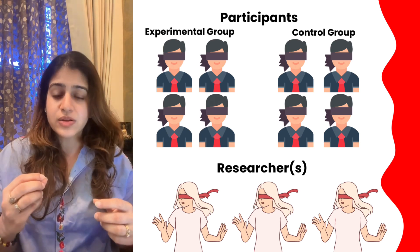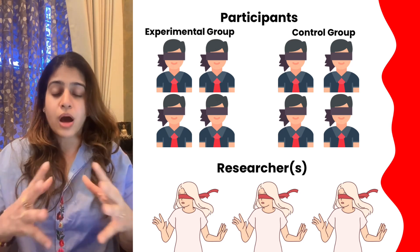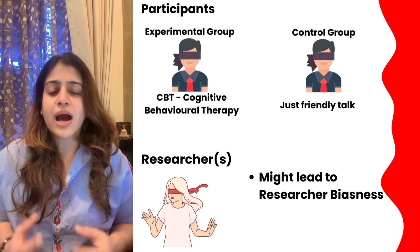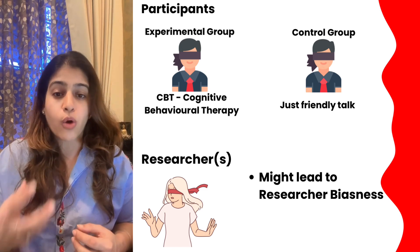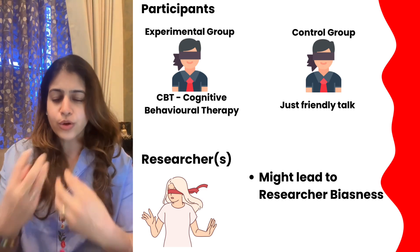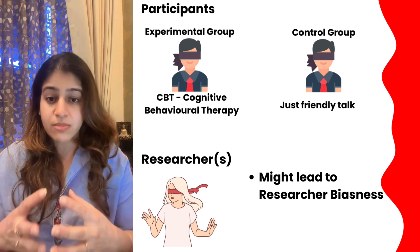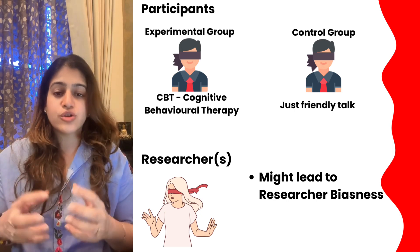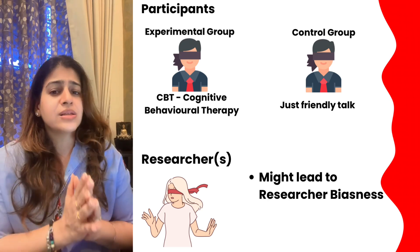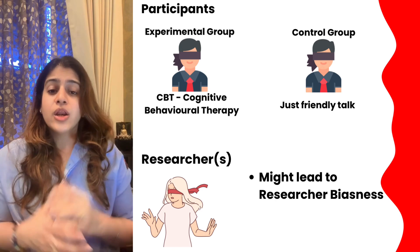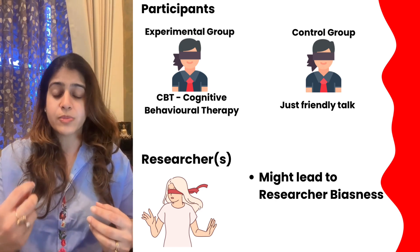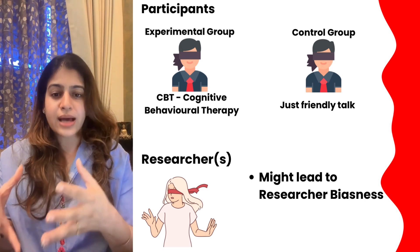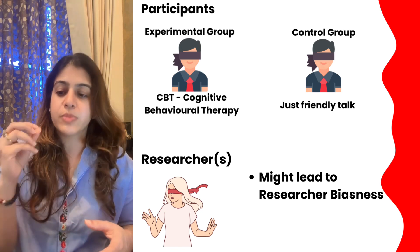So what is a double blind study? Double blind study means that not just the participants, but also the researcher does not know which participant is in which condition — either experimental or control. For example, if I'm a researcher studying the effect of Cognitive Behavioral Therapy (CBT) on participants, the experimental group gets CBT and the control group just gets a friendly talk. If I know which participant is in which group, it might lead to researcher bias — I might treat that participant differently.